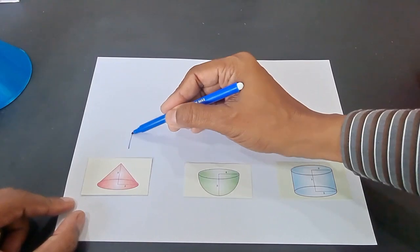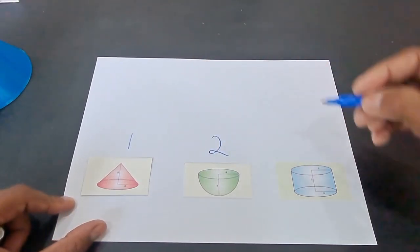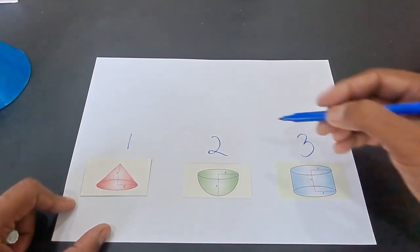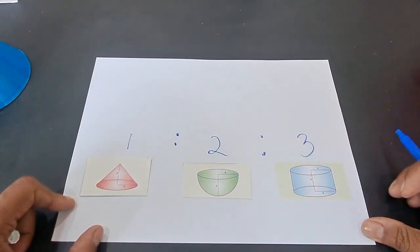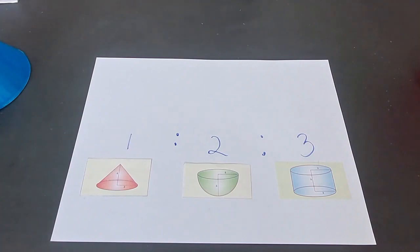Therefore, if you assume that the volume of this cone is one, then the volume of the hemisphere comes out to be two, and the volume of cylinder comes out to be three, thereby showing that the ratio of the volumes of the three figures is 1:2:3, which completes our activity.